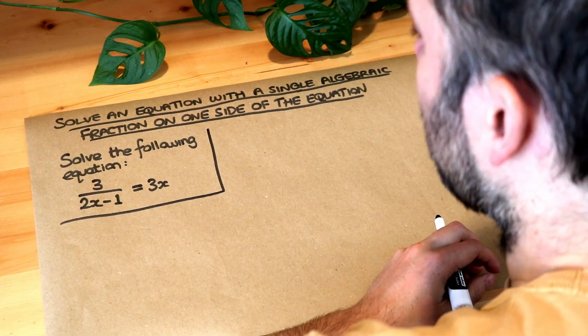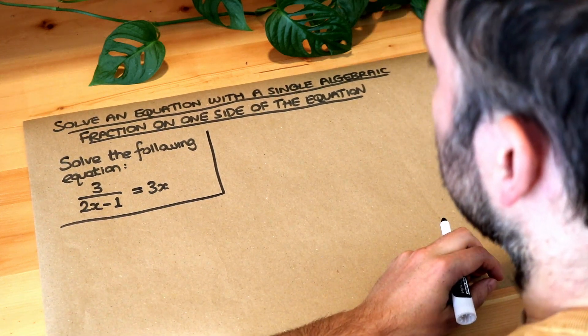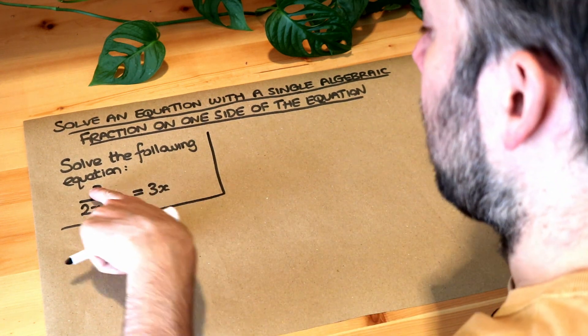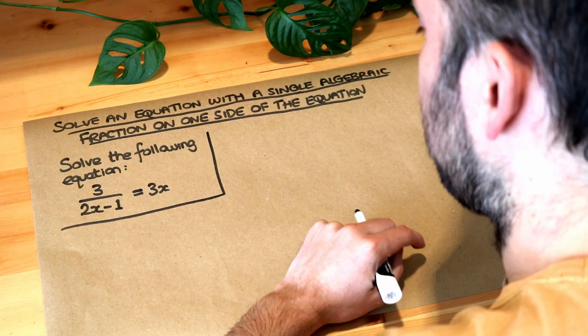Hello and welcome to this Dr. Ross video on solving an equation with a single algebraic fraction on one side of the equation. So you want to solve this equation: 3 over 2x minus 1 equals 3x.